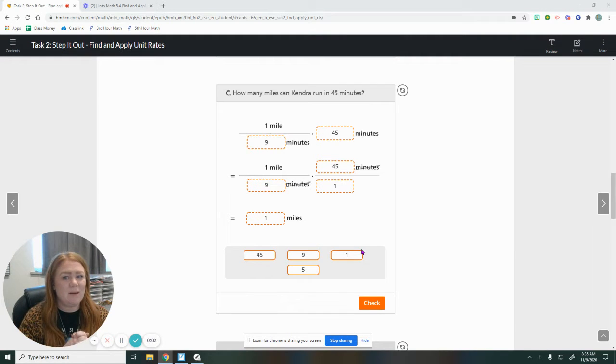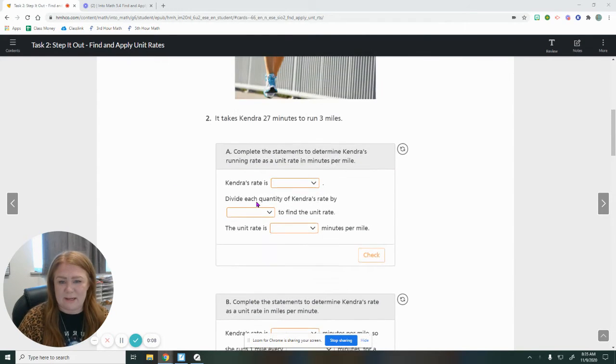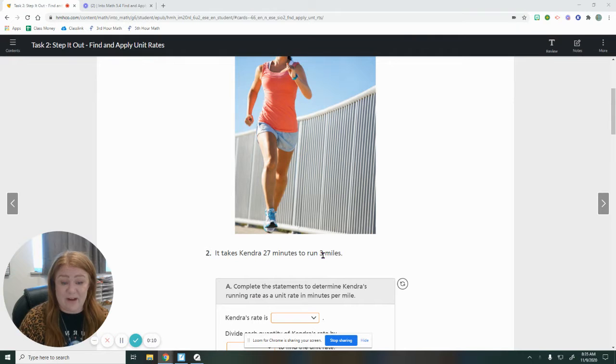Okay, so I want to talk about this problem in the book yesterday. We figured out pretty easily that 27 divided by 3 was 9. So it took Kendra 9 minutes for every mile, or every minute was a 9th of a mile.